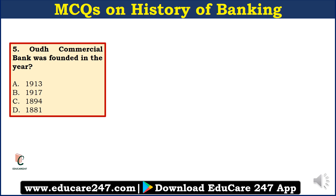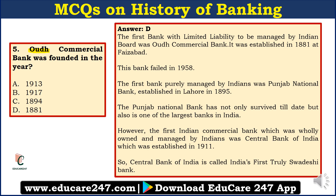Question number five: Oath Commercial Bank was founded in the year — 1913, 1917, 1894, or 1881? Oath Commercial Bank is significant because it was the first limited liability bank in India to be managed by an Indian Board of Directors. The answer is D — 1881. It was established in 1881 at Faisabad. However, the bank failed and was liquidated in 1958.